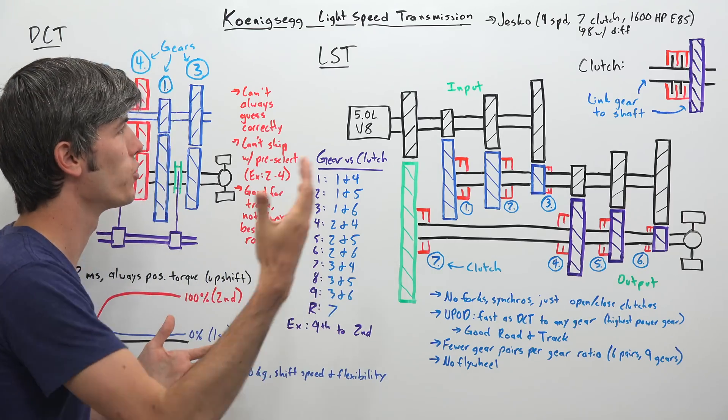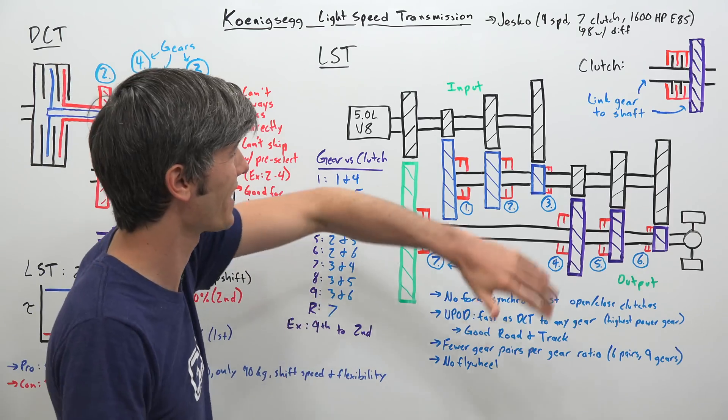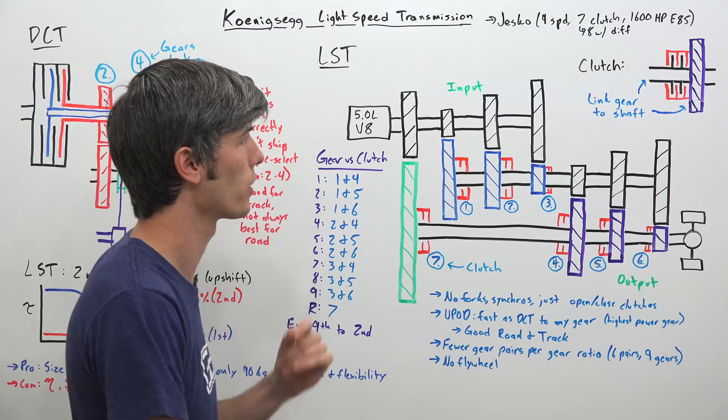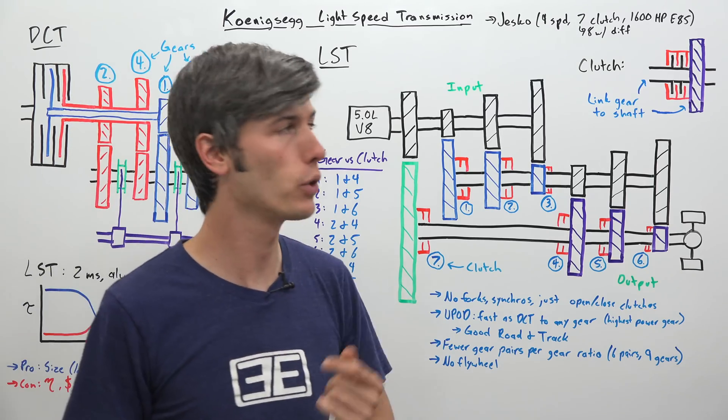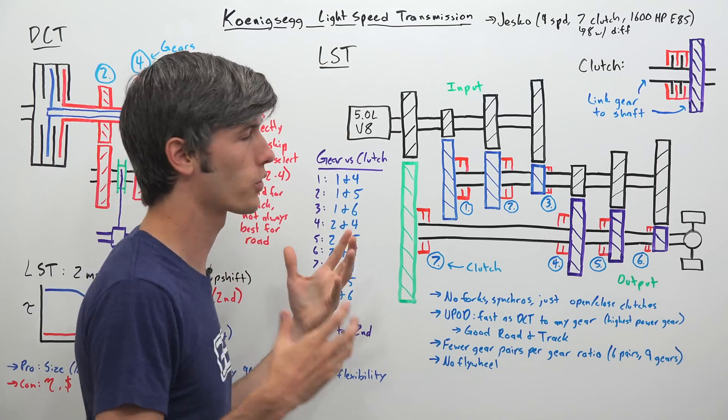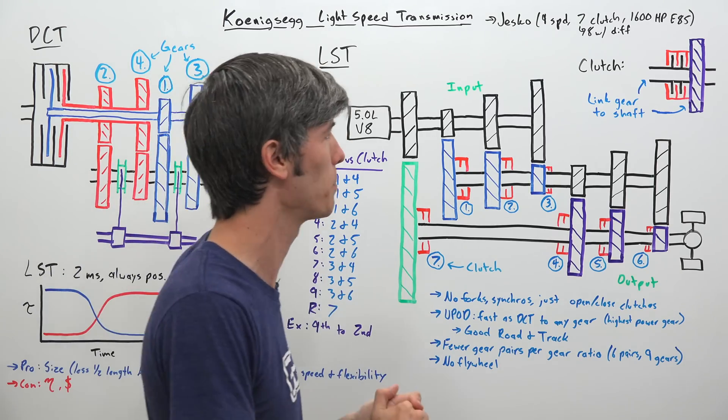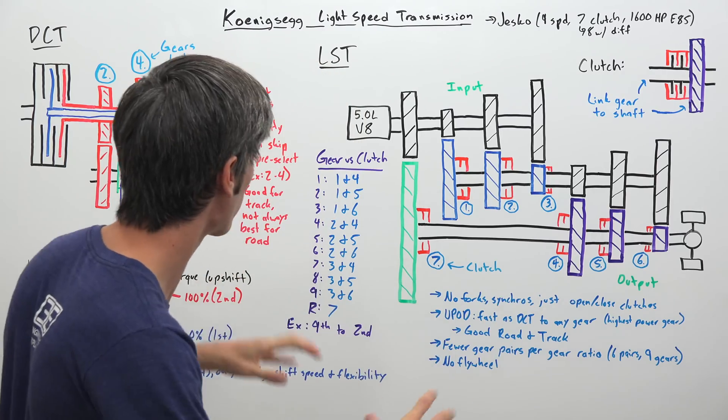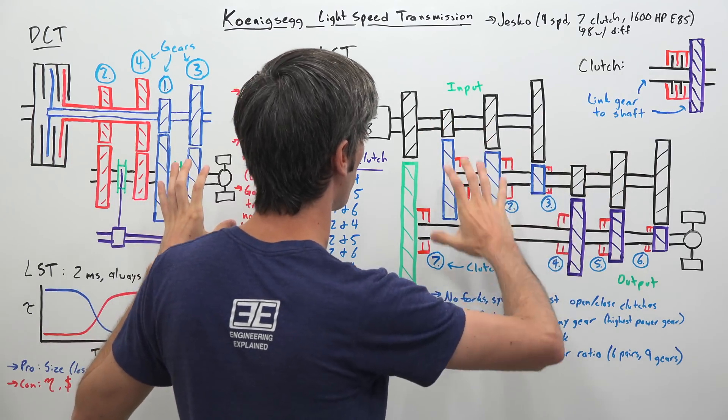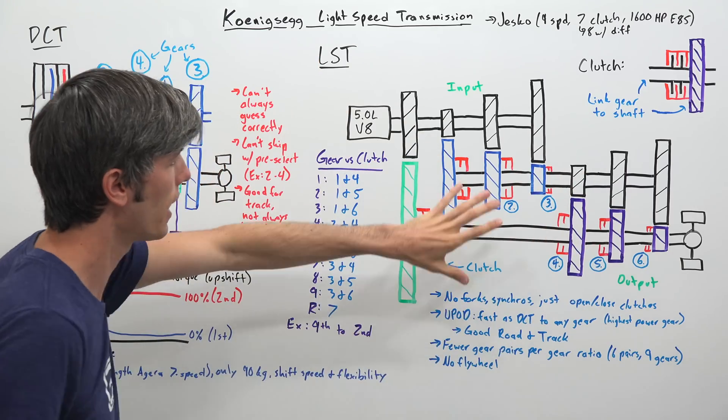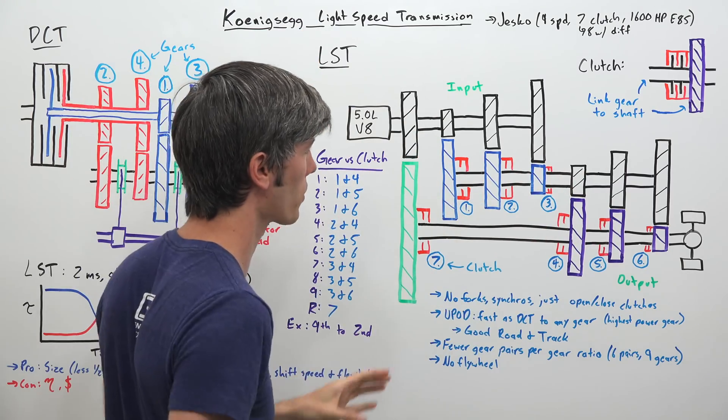The light speed transmission is used in the Koenigsegg Jesko. It is a 9 forward speed transmission. There are 7 clutches, 8 if you count the clutch for the differential. This car is producing 1600 horsepower on E85, and so I've got drawn the light speed transmission here.